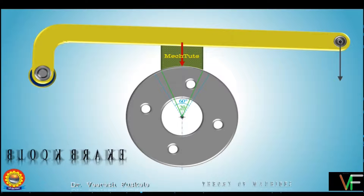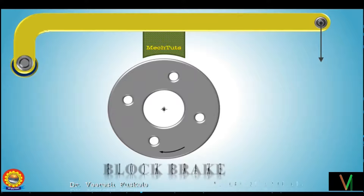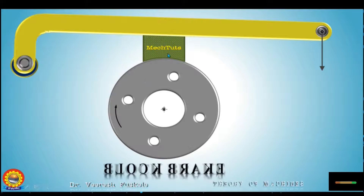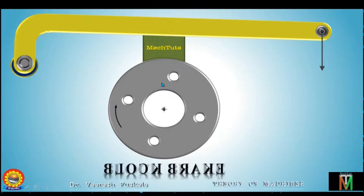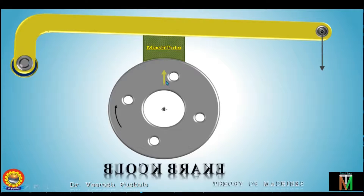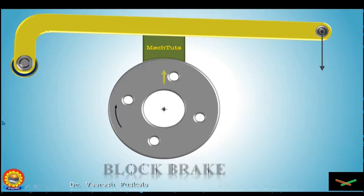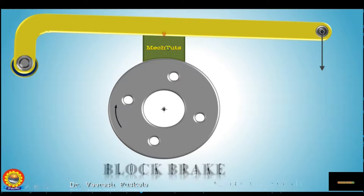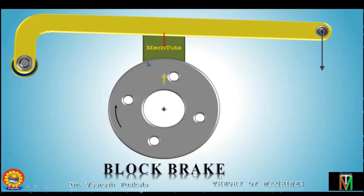Moving ahead, let us see what forces will be acting on the drum and the block and draw the free body diagram. After force P is applied, this will stop the drum. The block will apply a radial force on the drum, and in reaction, the drum will apply a normal reaction on the block. This red one is the radial force applied by the block; the other is the normal reaction of the drum on the block.